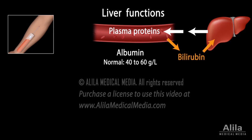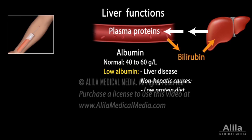Normal albumin level in the blood is between 40 and 60 grams per liter. A lower than normal albumin level may be a sign of liver disease. However, low serum albumin may also result from low protein diets, poor absorption of proteins, or abnormal loss of proteins in urine.